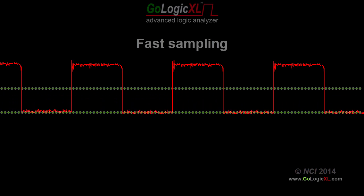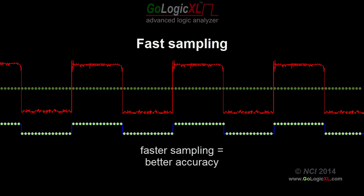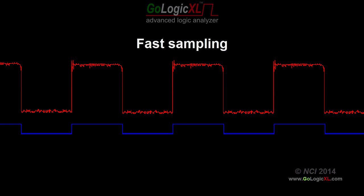If the sample points occur close together relative to the input signal speed, the result is an accurate recreation of the original signal. The best accuracy is achieved by sampling many times faster than the input signal speed.